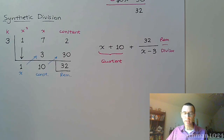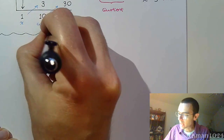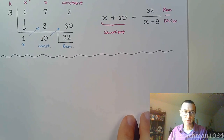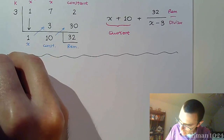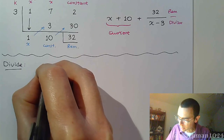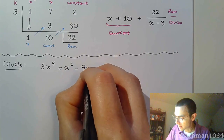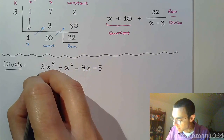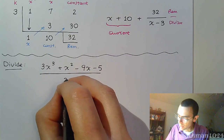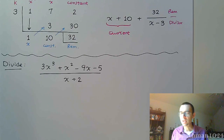Let's do an example with more terms to see how it works, and then later on we'll see the applications of this. Divide 3x³ + x² − 9x − 5 all over x + 2. The divisor is x + 2. Synthetic division is going to be much faster and more efficient than long division here.